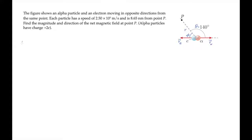We can find the magnetic field at point p using the Biot-Savart law. Mu naught over 4 pi multiplied by the charge q times v cross r hat over r squared.